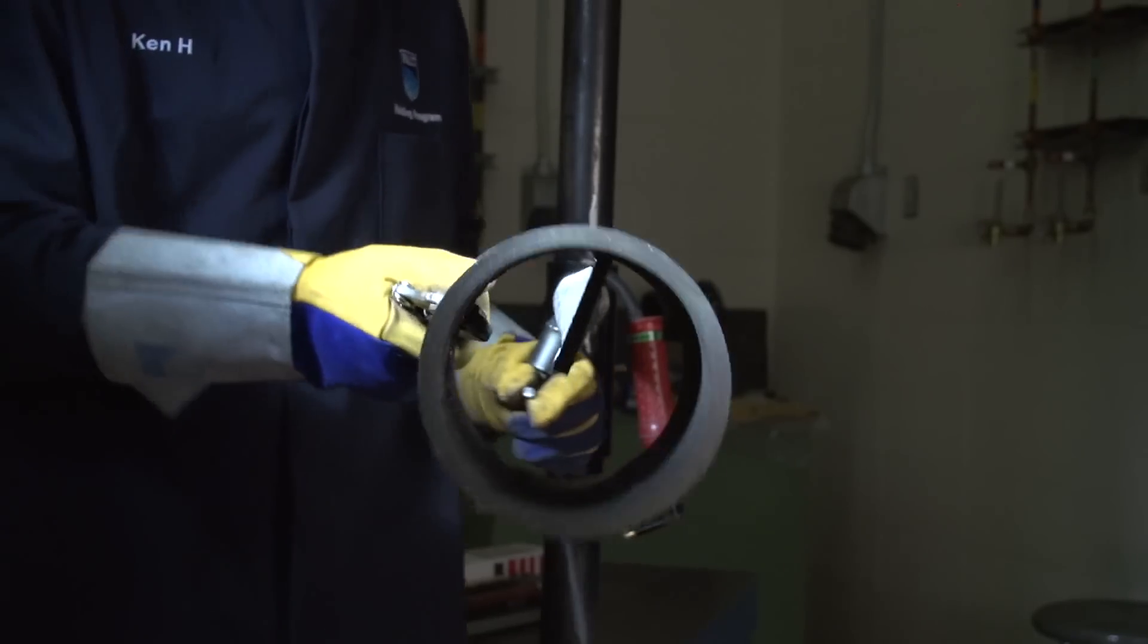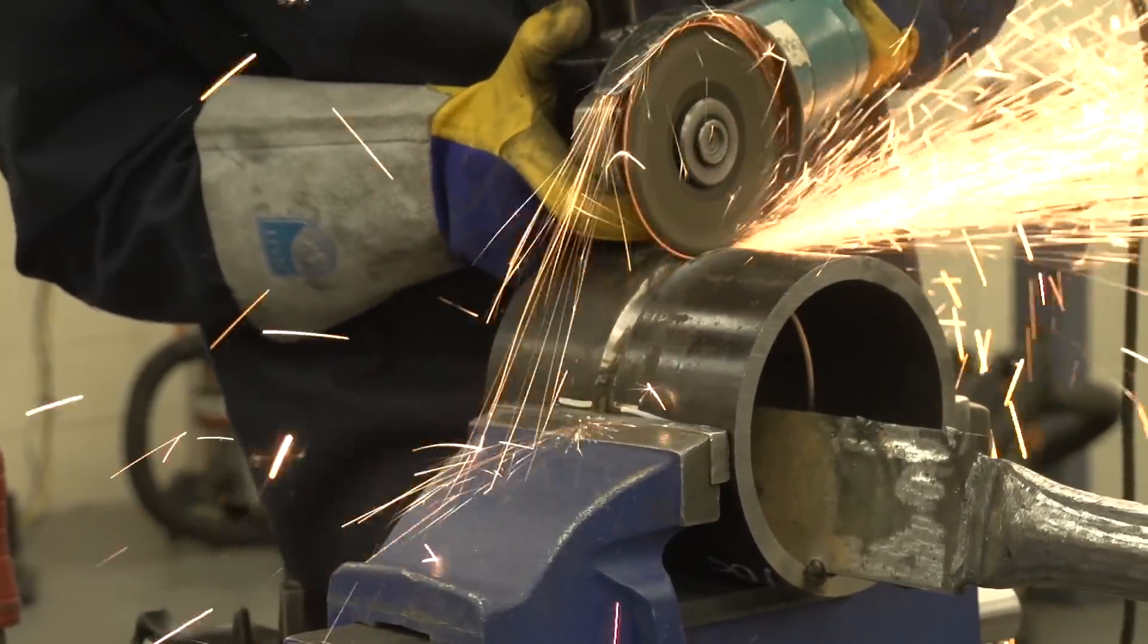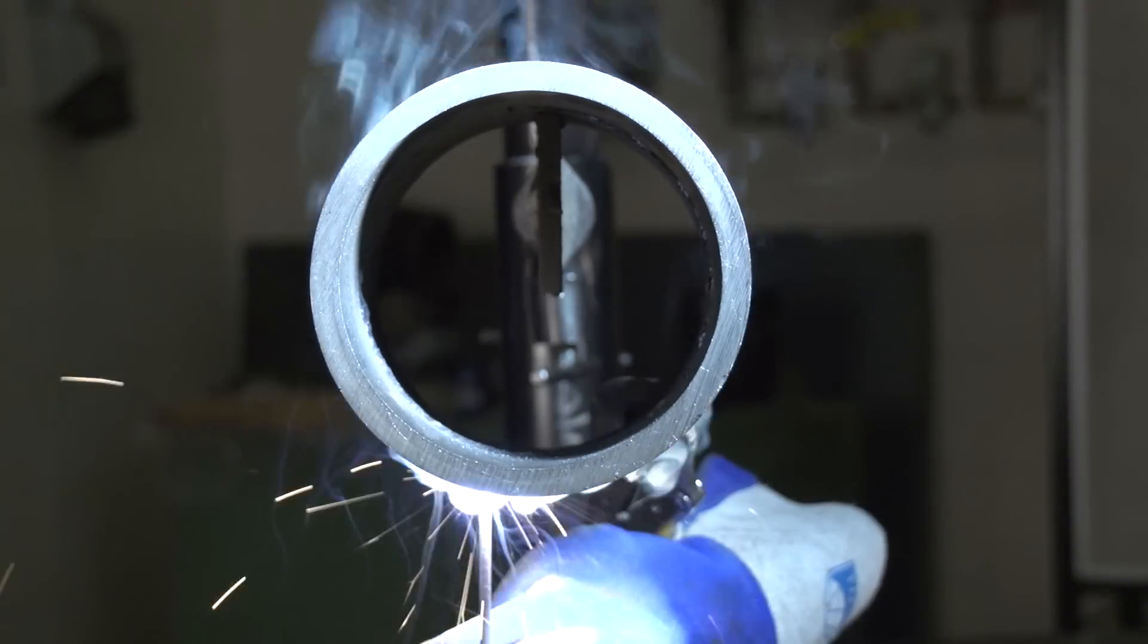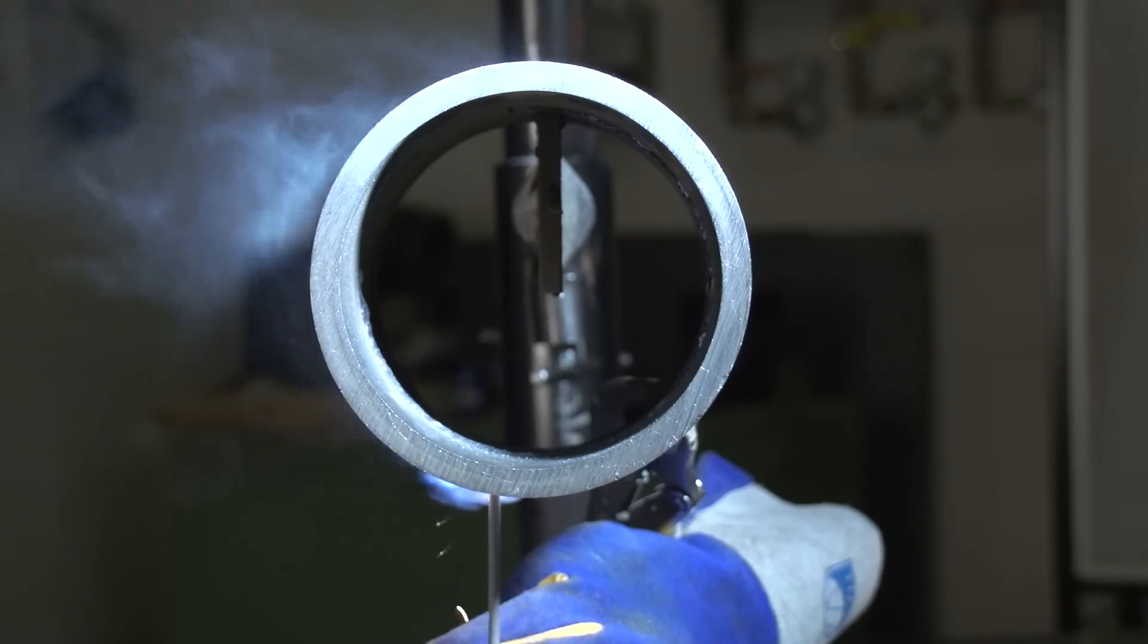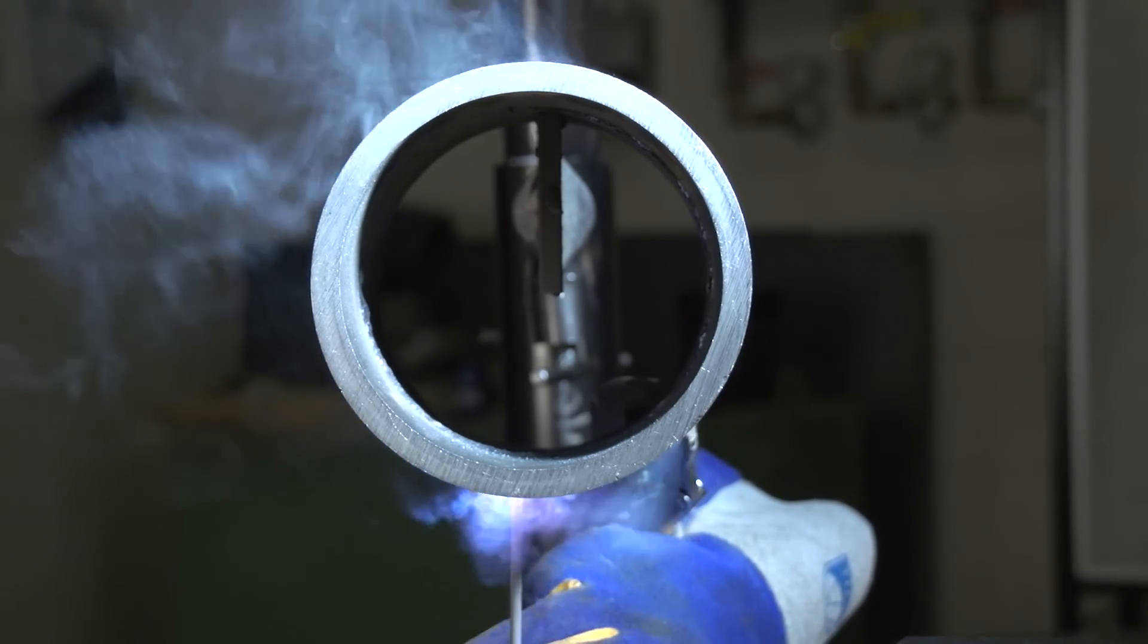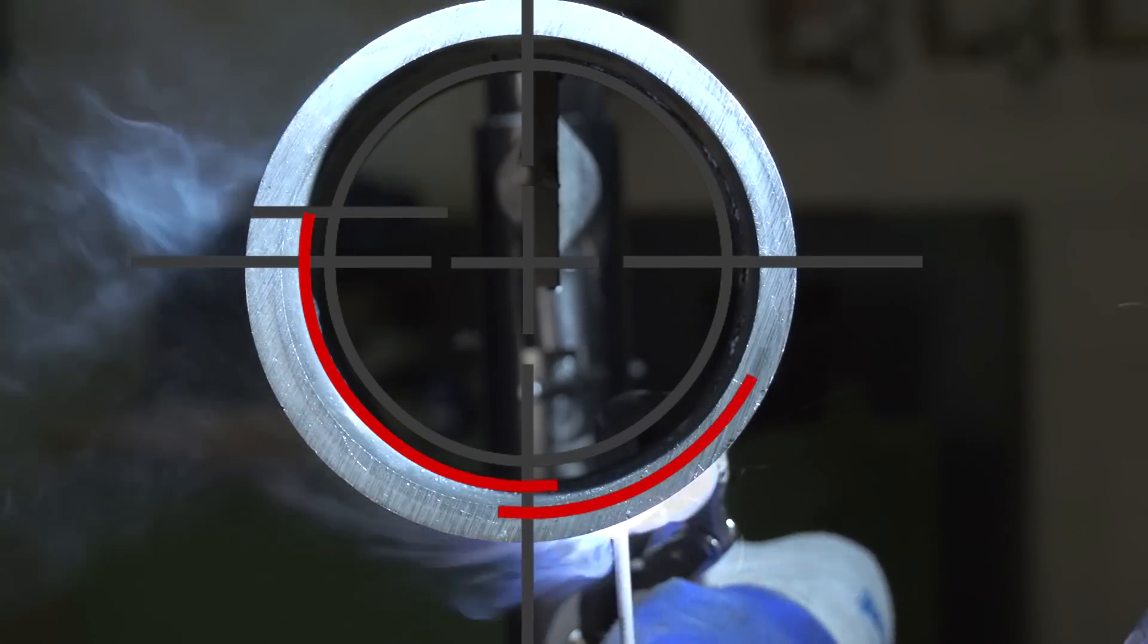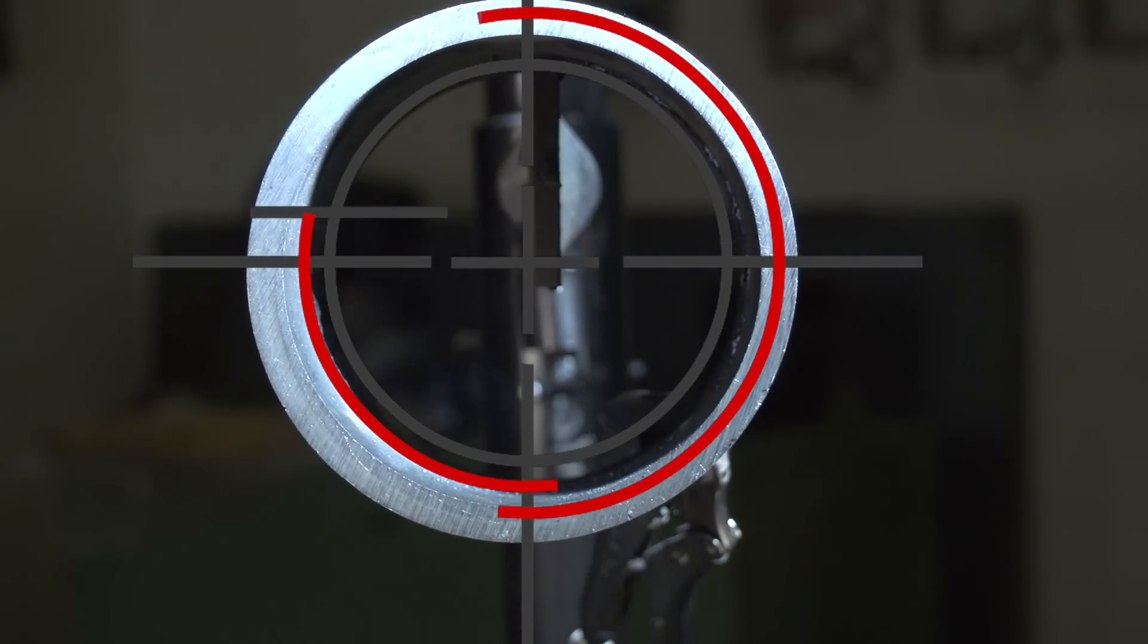Before starting the next fill pass, the beginning of the previous fill pass should be ground out. Place the pipe coupons back in the 5G position, taking care to match the safety officer's height mark. Proceed to fill pass number 2 in the opposite direction by beginning a quarter of an inch before the 6 o'clock position and continuing up the pipe to 3 eighths of an inch past the 12 o'clock position. Grind out the start of that pass in preparation for the next one.